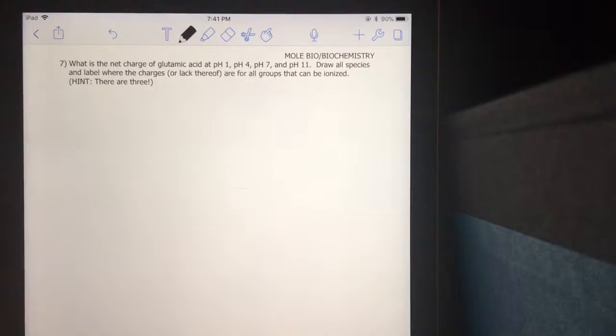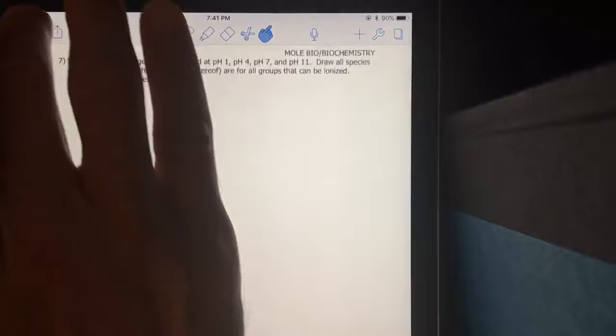And the last thing you have to do, number seven, it's kind of like what you did yesterday. What's the net charge of glutamic acid at those particular pHs? So remember, glutamic acid does have an R group that can be ionized. So at each of those pHs, I want you to find out whether or not the carboxyl group, amino group, and R group are they protonated or deprotonated.